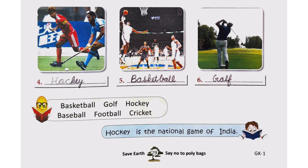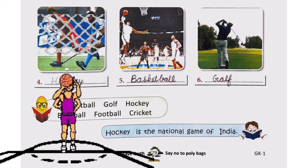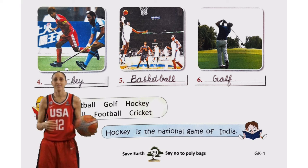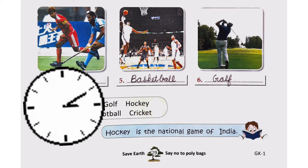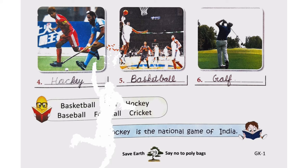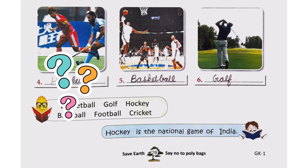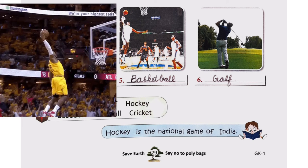Students, now let us see the fifth picture. We see a player throwing the ball inside the basket. In this game there are five players in each team. So we will write in the fifth one: basketball.